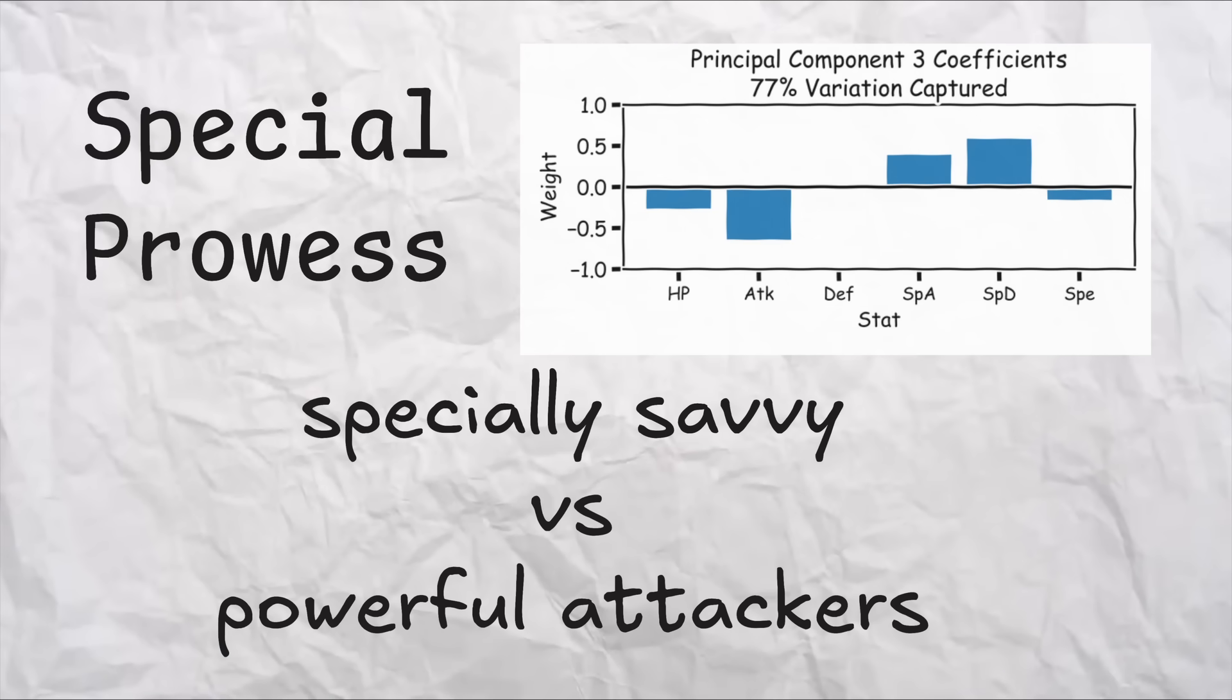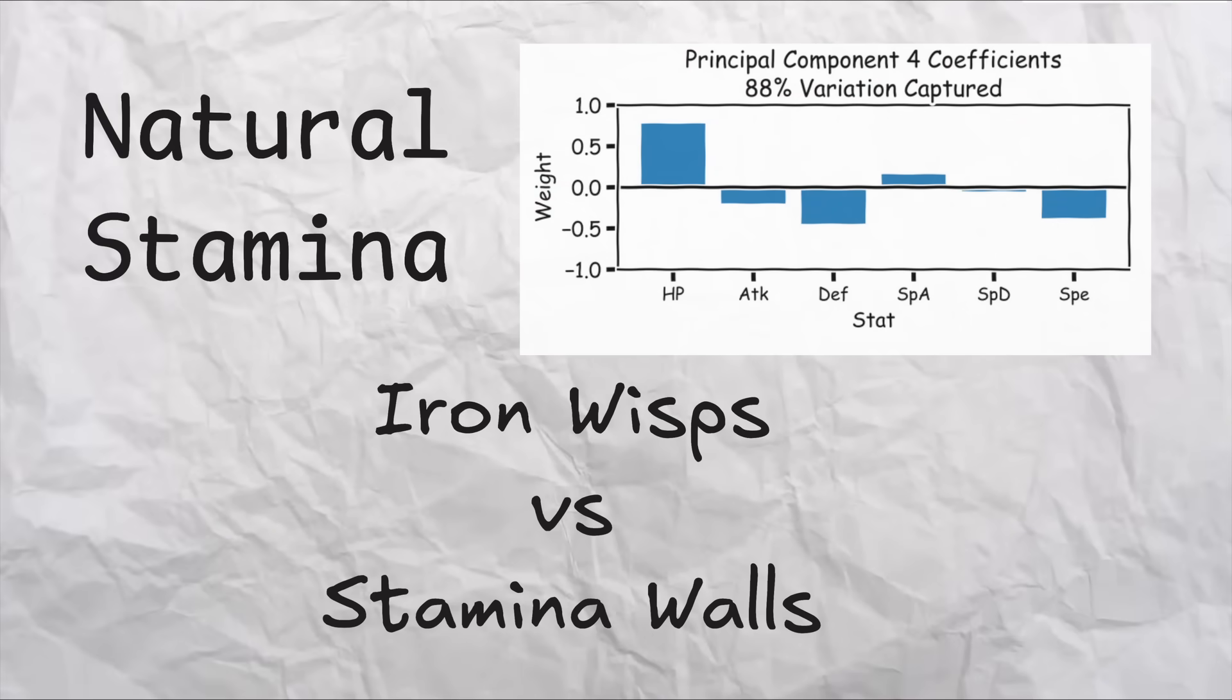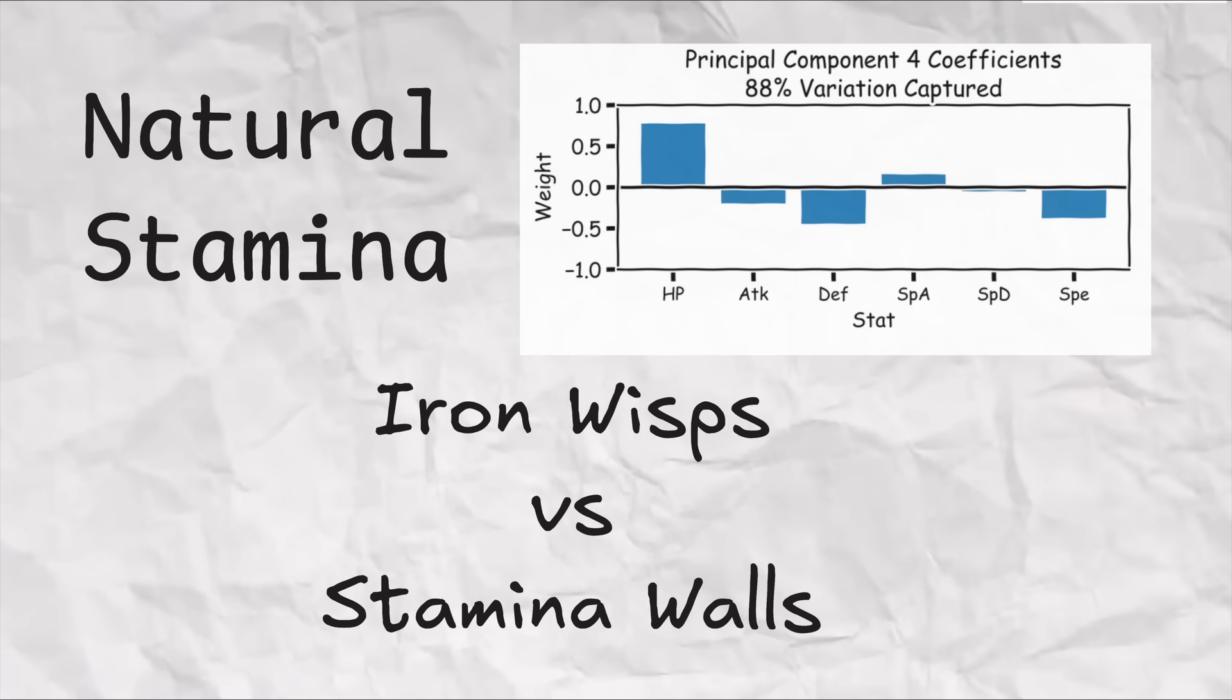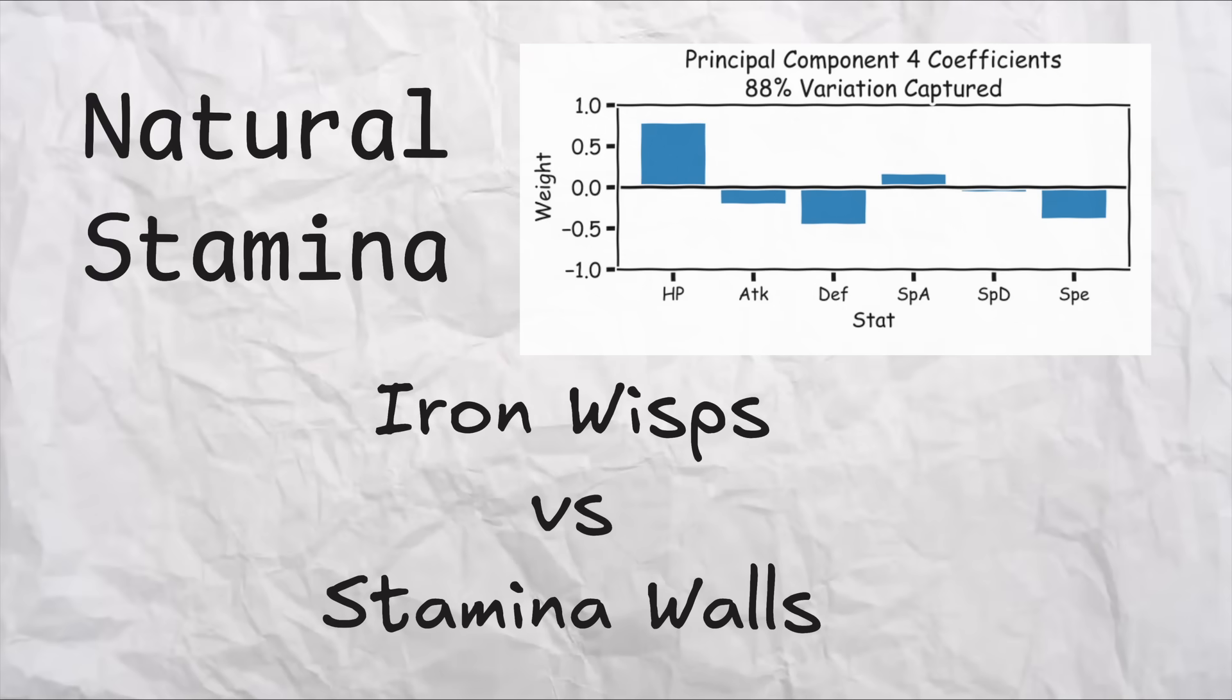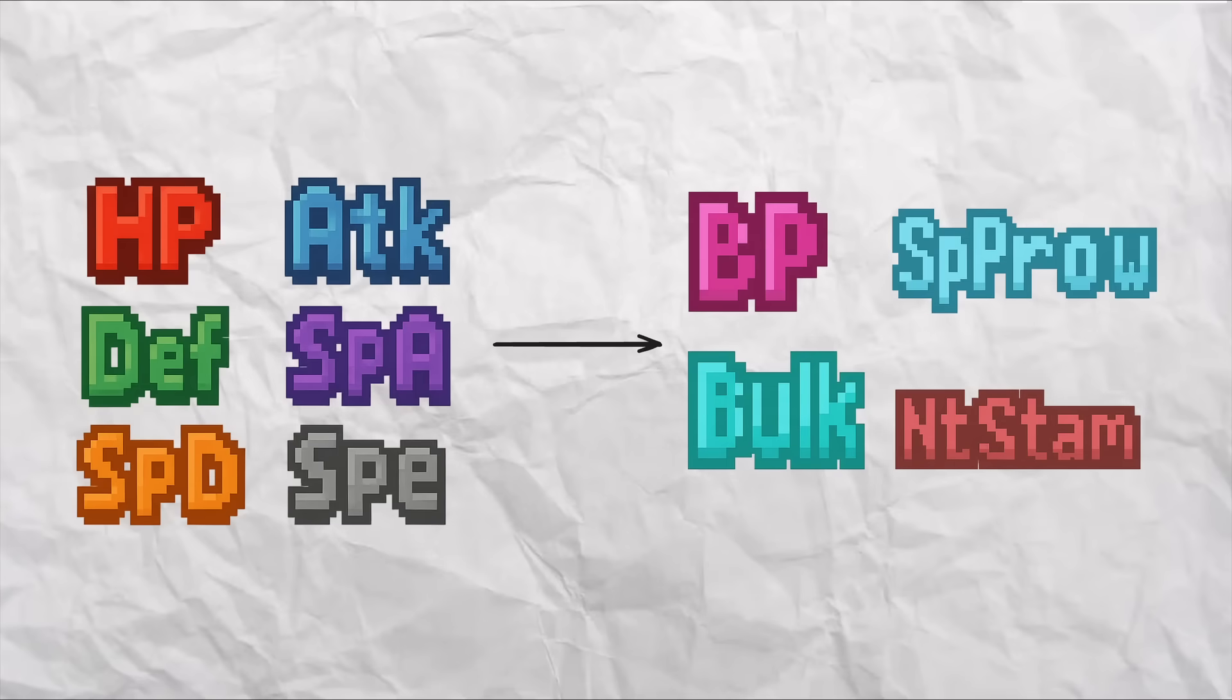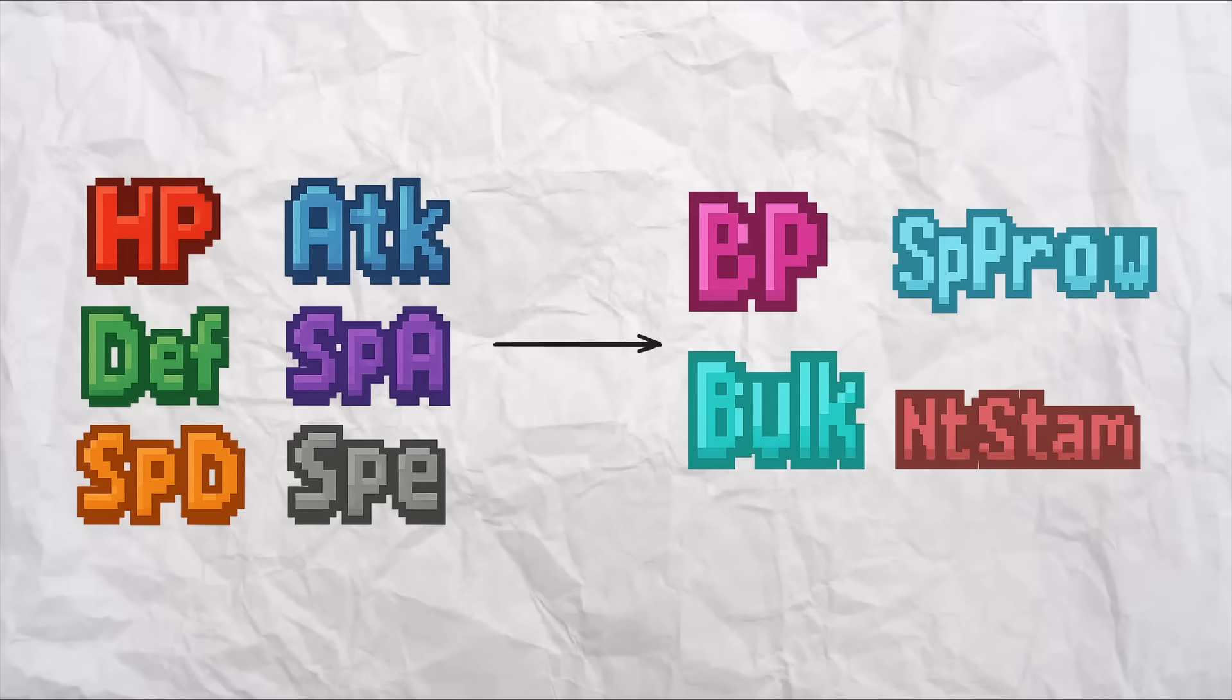If you can come up with better names for these, and I'm sure you can, feel free to leave them in the comments section below. The final new stat, as mentioned before, separates the Iron Wisps, those Pokemon with low HP, high defense, and high speed, from the stamina walls, which have high HP, low defense, and low speed. So we're going to call this the natural stamina stat, since this stat is so intimately tied with HP. But the natural part implies that having a low value means your stamina might come from other places, namely the higher defense or higher speed. And so there you have it, four new stats that capture most the majority of the variation in the existing six stats. Base power, bulk, special prowess, and stamina.